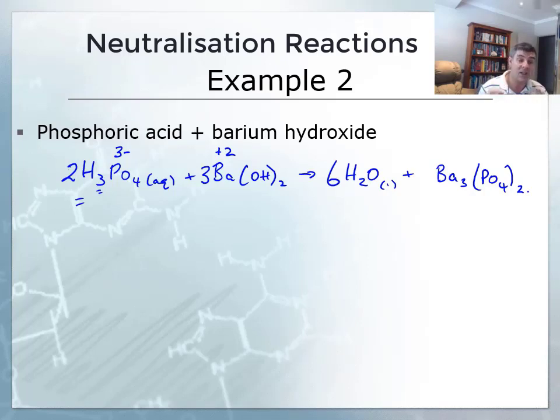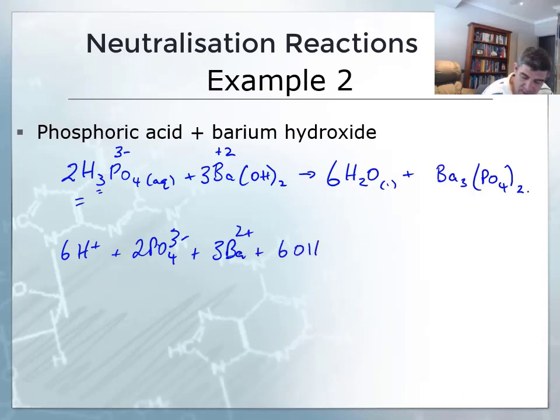But let's quickly just have a look at the net ionic equation. So if I go here, I've got six H pluses, when I pull this apart, I've got two PO4 three minuses, I've got three Ba2 pluses, and I've got six OH minuses.